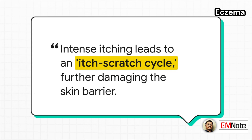This is a central concept you have to understand with eczema: the itch-scratch cycle. It's a vicious loop. The intense itching, or pruritus, leads to scratching. That scratching further damages the skin barrier, which increases inflammation and, in turn, makes the itching even worse. A primary goal of therapy is to interrupt this cycle.